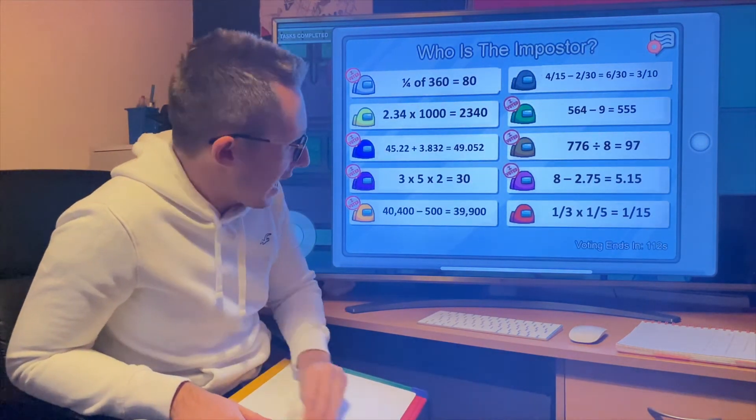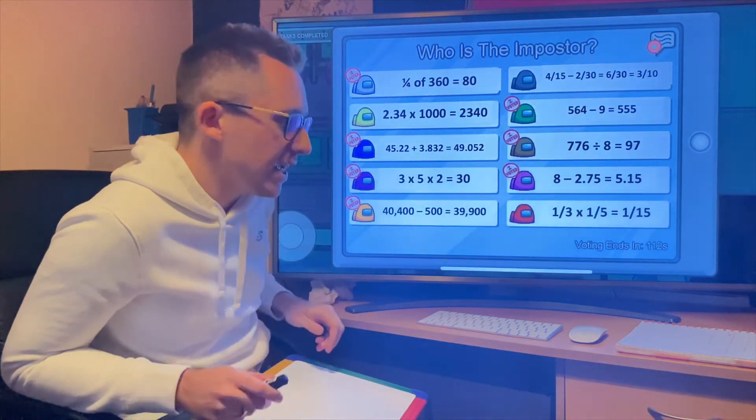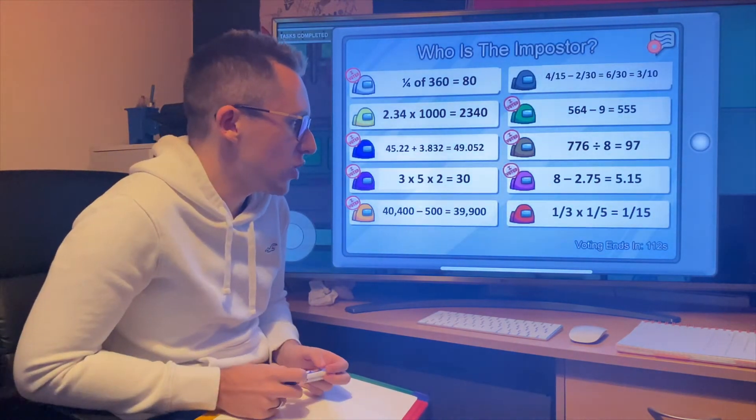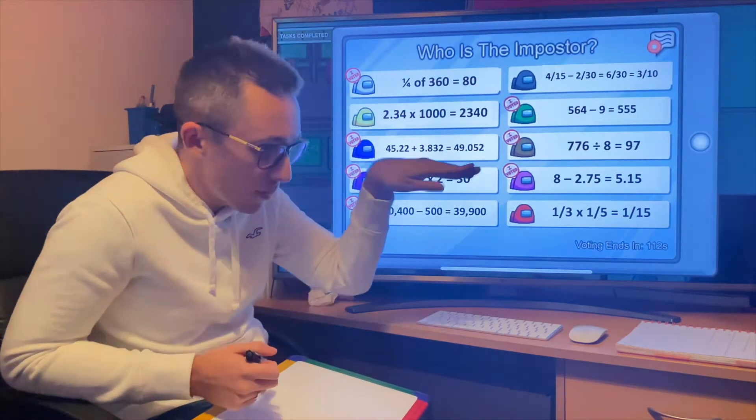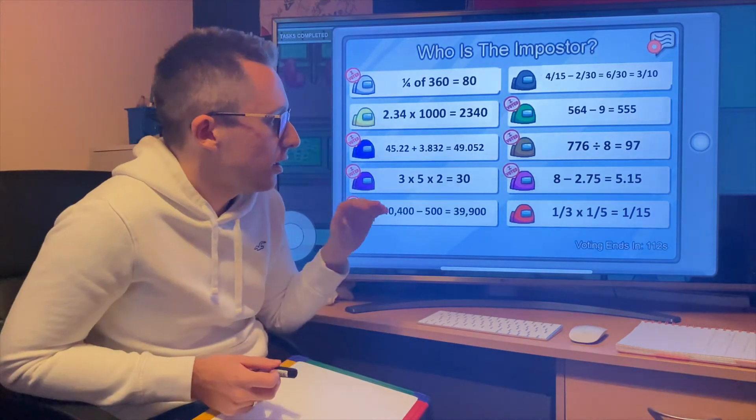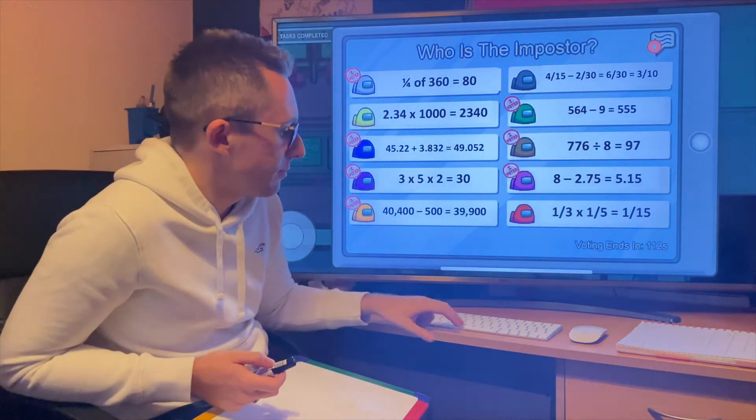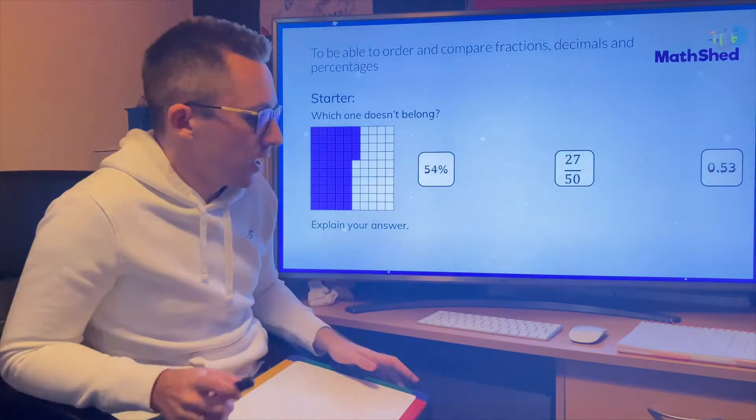Final one then. Red: 1/3 times 1/5 is 1/15, because we just times them together. 1 times 1—numerators would be 1. 3 times 5 would be 15. So the answer is 1/15.